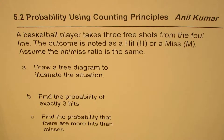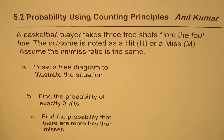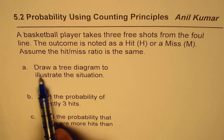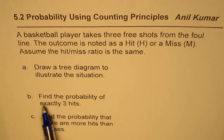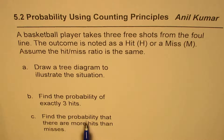I'm Adil Kumar and in this video we will learn how to apply the counting principles to find probability. The question here is: a basketball player takes three free shots from the foul line. The outcome is noted as a hit H or a miss M. Assume the hit or miss ratio is the same, that is 50-50. Draw a tree diagram to illustrate the situation, find the probability of exactly three hits, and find the probability that there are more hits than misses.